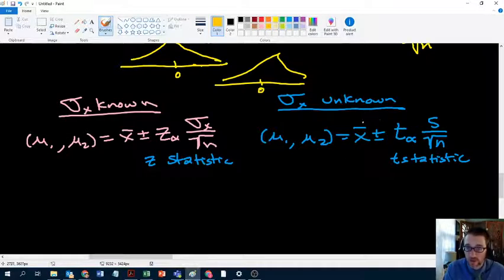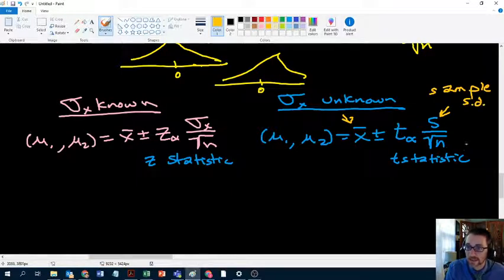Now, everything here I feel very confident you can do, except for the t. So let's talk. X bar is given, s is usually given, remember it's called the sample standard deviation, so you find that in the question. N is the sample size. So the real question is, how do we find t?